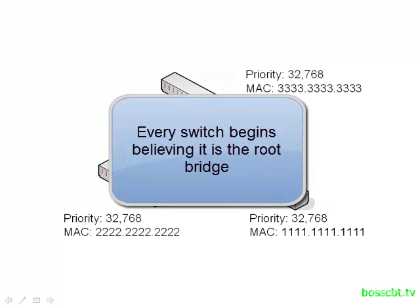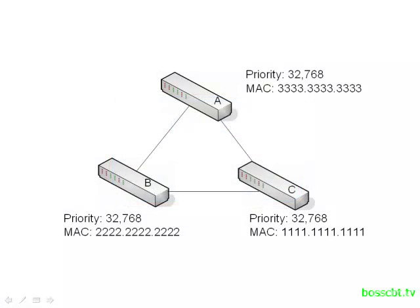The first rule is that every switch believes it is the root bridge at the beginning of the election process. The reason is that they haven't had a chance to exchange information yet, so they don't know any better. They have to believe somebody's the root, so why not themselves — they only know about their own priority and their own MAC address. So in the very beginning, switches A, B, and C all think they're the boss.